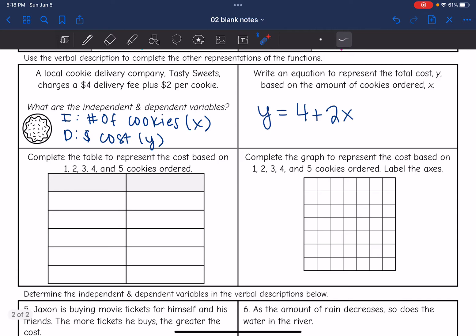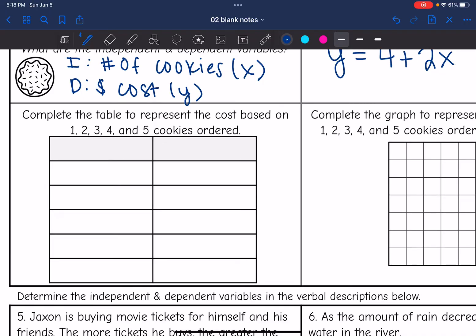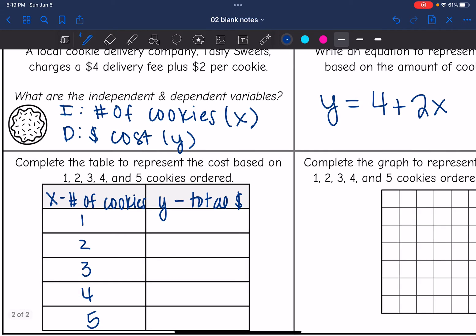Now it wants us to complete the table to represent the cost based on 1, 2, 3, 4, and 5 cookies ordered. So first thing I need to do is say what the X and Y represent. X is the number of cookies, and then Y is the total cost. And they told us how many cookies they want us to figure out: 1, 2, 3, 4, or 5 cookies. And then we wrote an equation for the total cost, and it told us in the word problem what the total cost is. It is 4 plus 2X.